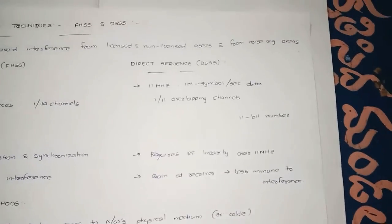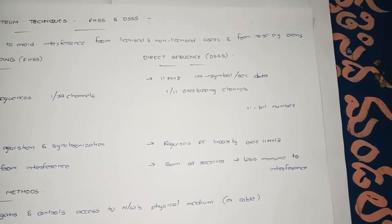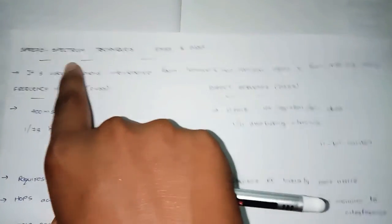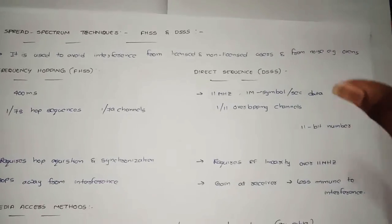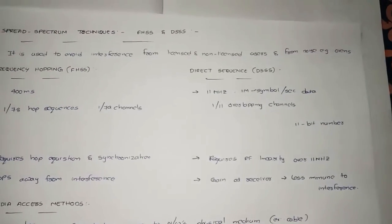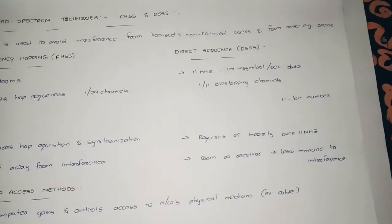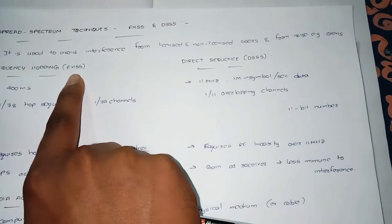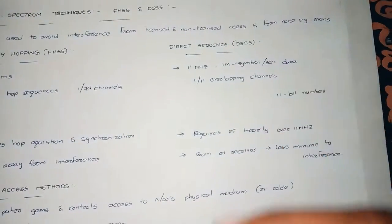After the IEEE standards, we need to discuss how data is transmitted and how networks are formed. This leads us to spread spectrum techniques. Spread spectrum is used to avoid interference from licensed and non-licensed users and to reduce noise. If we access a network, both licensed and non-licensed users may be present, and spread spectrum helps avoid their interference in our direct network access.